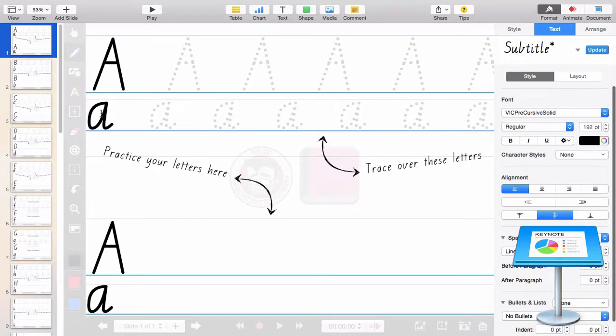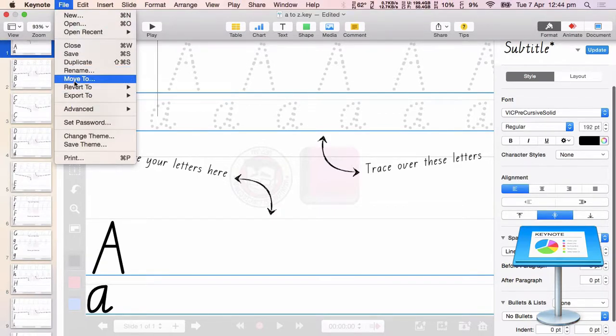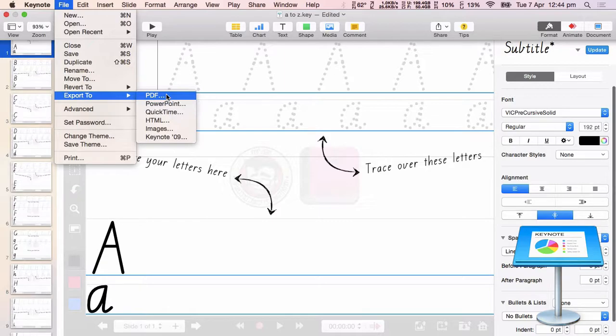Once you've done that, all you need to do is file, export this as a PDF. And it'll be a PDF with 26 slides, in the case of this, 26 slides. And then you send that PDF straight to your iPad.